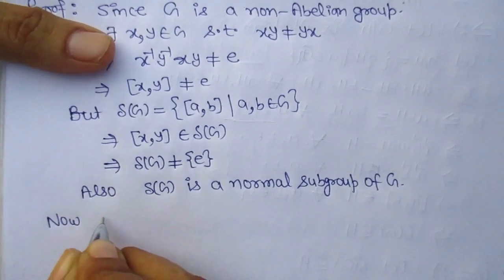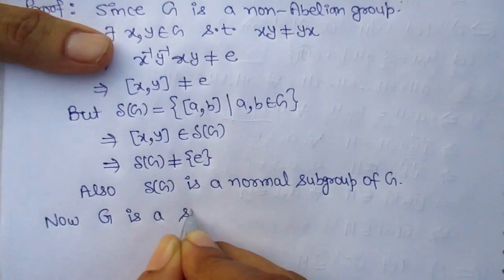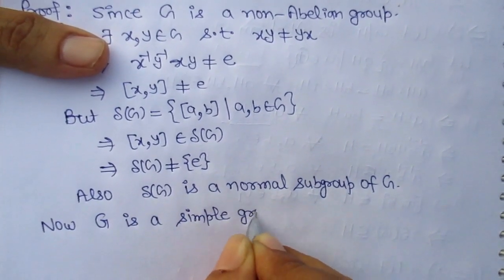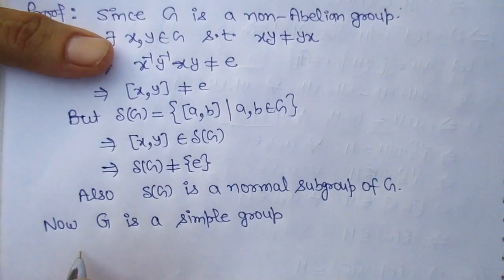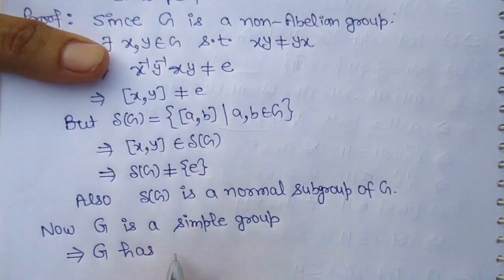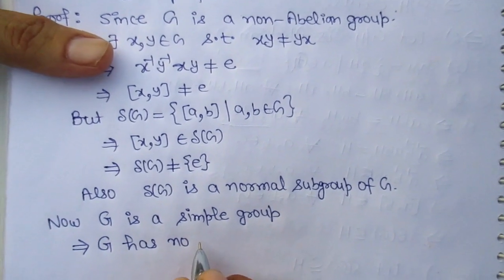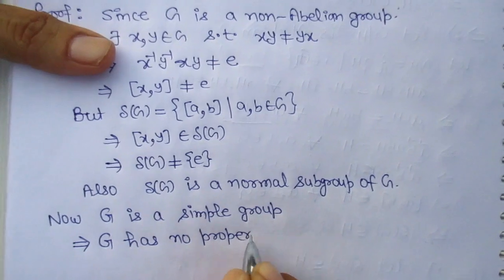Now G is a simple group. It implies G has no proper normal subgroups.